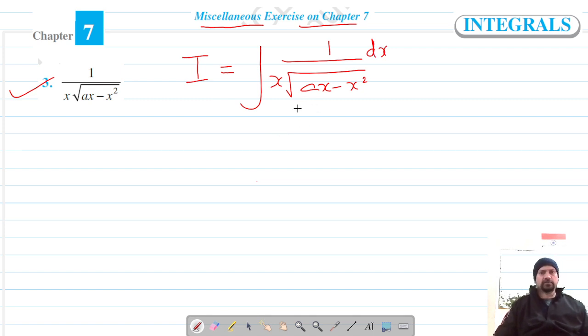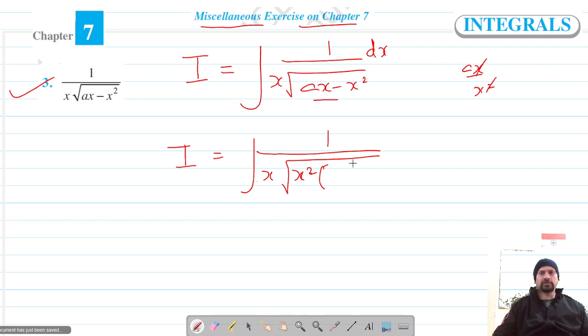Let's try to simplify what's under the root. For that, let me take x squared as common. So it's 1 over x, and under the root if I take x squared common, that means I have to divide the terms by x squared, which gives me a over x.